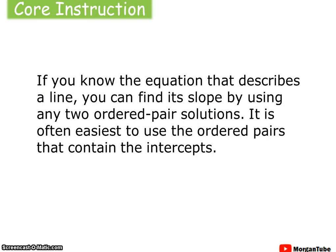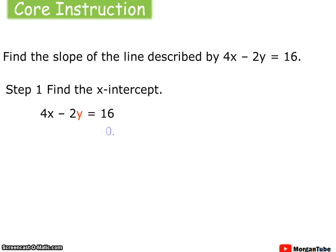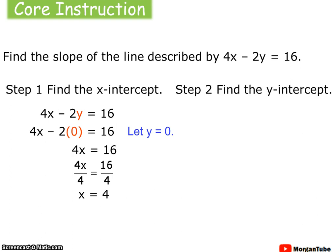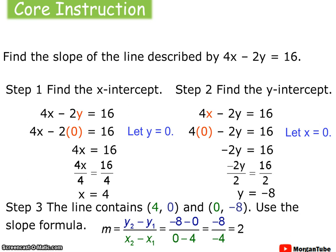If you know the equation that describes a line, you can find the slope by using any two ordered pair solutions. It is often easiest to use the ordered pairs that contain the intercepts. So if I give you the line 4x minus 2y equals 16, we just need two points from this line. We can simply use the intercepts: find the x-intercept by letting y equal 0, and find the y-intercept by letting x equal 0. Given these two points — the intercepts x is 4 and y is negative 8 — I can use those as ordered pairs (4, 0) and (0, negative 8) and plug them into the slope formula. We find a slope of 2.